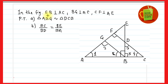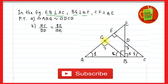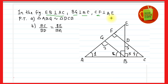Here is the first question on the screen. In the figure, EB is perpendicular to AC. BG is perpendicular to AE, and CF is perpendicular to AE. We have to prove that triangle ABG is similar to triangle DCB, and also that BC upon BD is equal to BE upon BA.